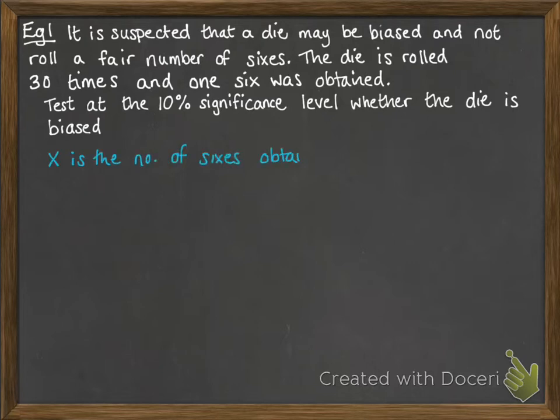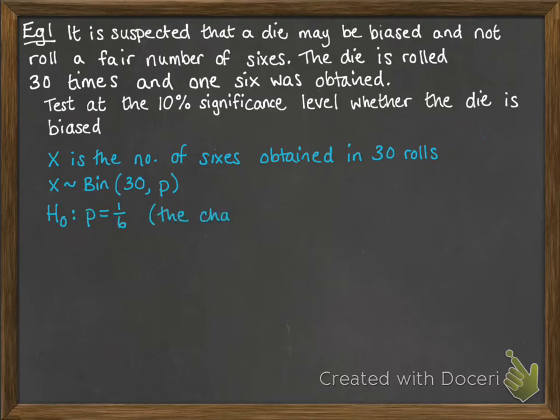First of all, we state our variable. So, X is the number of sixes obtained in 30 rolls. If we are assuming that it's a fair dice, then X would follow binomial distribution with 30 trials, and our probability of success in our null hypothesis would be 1 sixth, i.e. the chance of a six is fair.